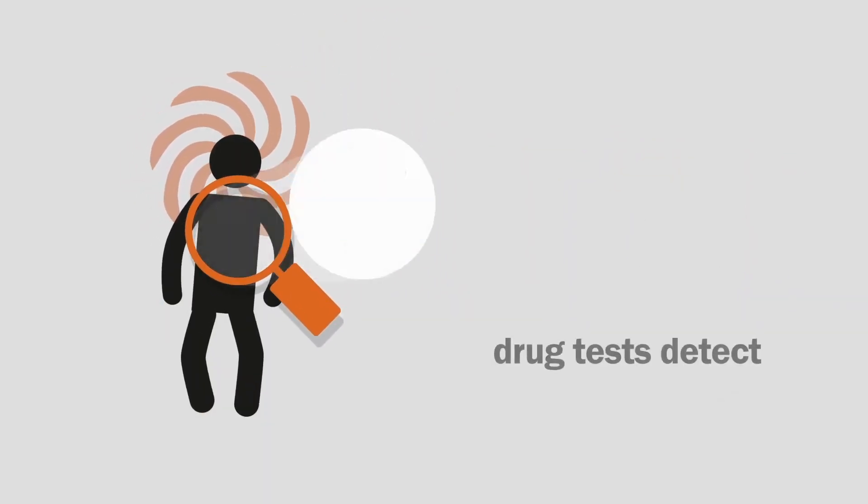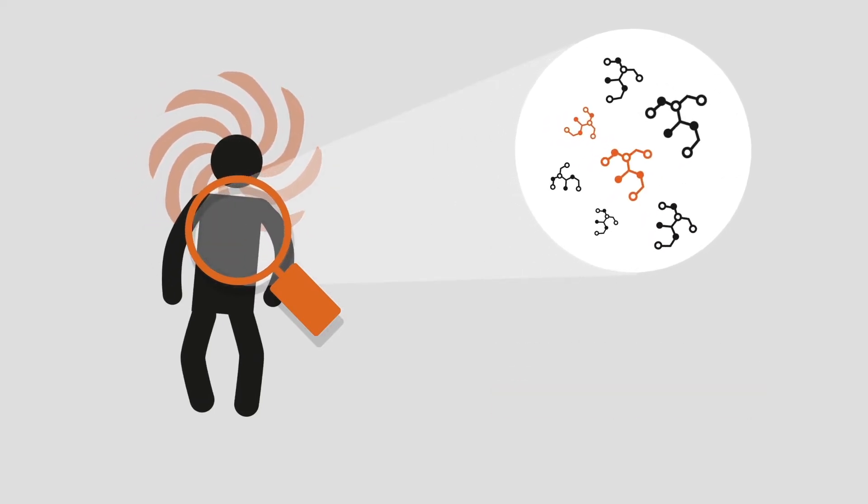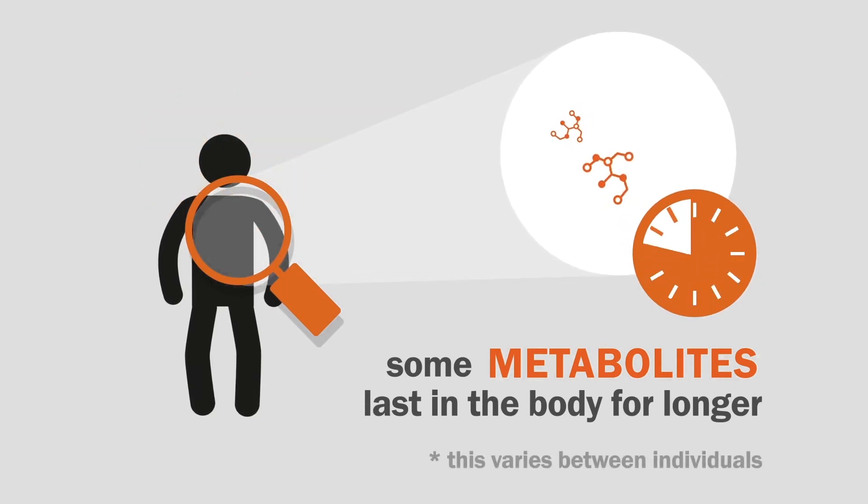Unlike breath tests for alcohol, most drug tests detect the metabolites left in the system when a body breaks down drugs. Some metabolites last in the body for longer, and this varies between individuals.